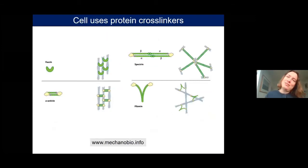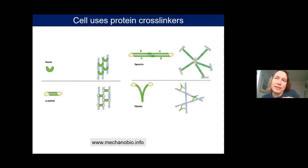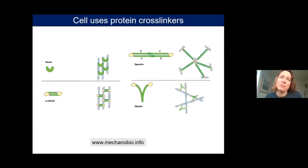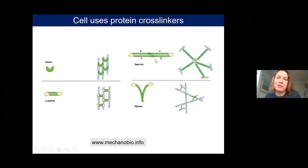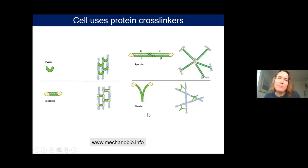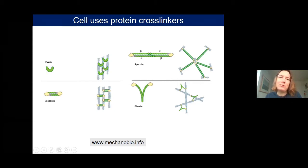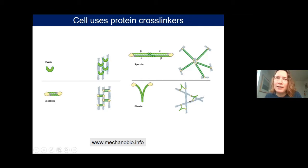In the cell, there are actin-binding cross-linkers that make connections between actin filaments. Examples include fascin, alpha-actinin, spectrin, and filamin. They have different structures: fascin and alpha-actinin tend to favor bundling, whereas filamin, which is V-shaped, favors isotropic cross-linking. The presence of cross-linkers has a huge impact on viscoelastic properties, and they introduce a new timescale in the system because their typical lifetime is on the order of seconds.